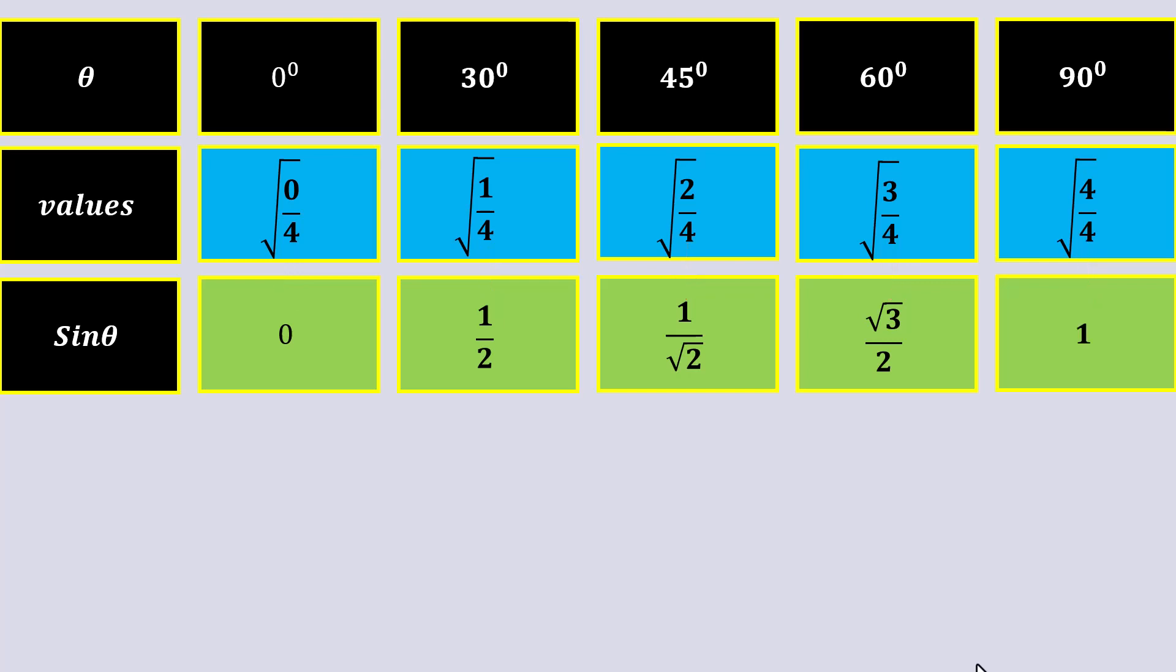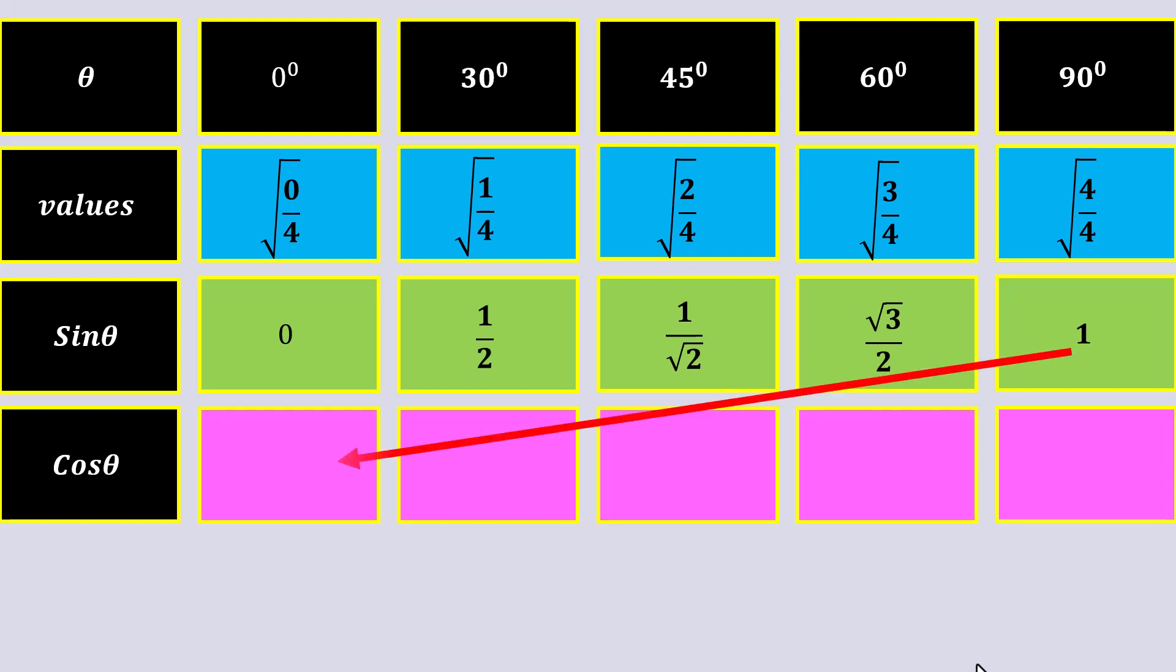To find values of cos theta, reverse the order of sine theta values. cos 0 is equal to 1, cos 30 is equal to under root 3 over 2.